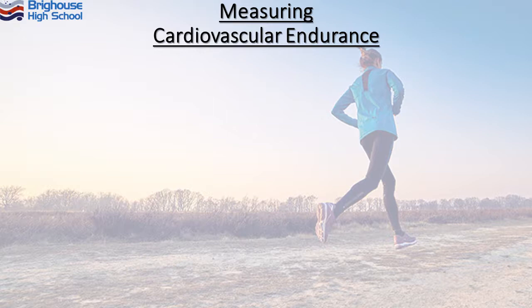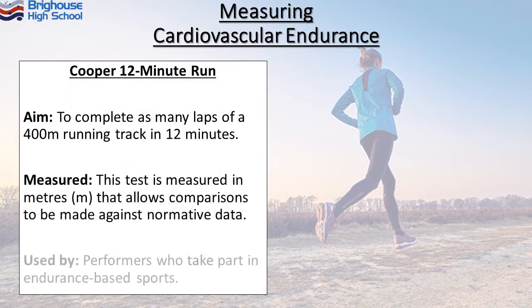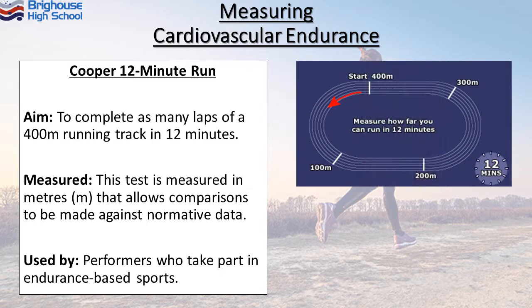Cardiovascular endurance is measured using the Cooper 12 minute run. There is a variation where you can do the Cooper 12 minute swim, but we're going to focus on the run. The whole idea is that you complete as many laps of a 400 metre running track as possible in 12 minutes. You measure the test in metres — how many metres you run within that 12 minutes — and then compare your results to the normative data.